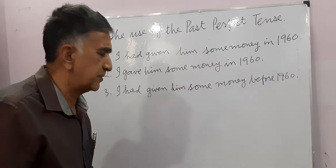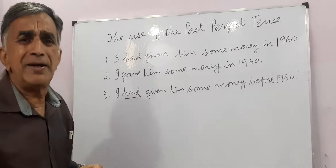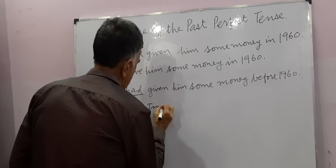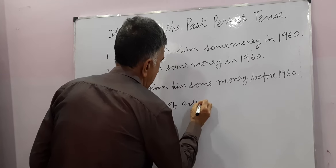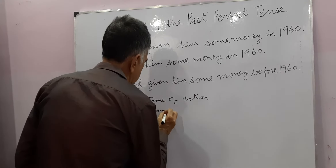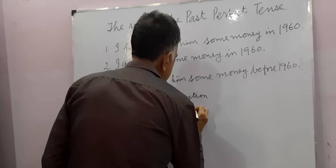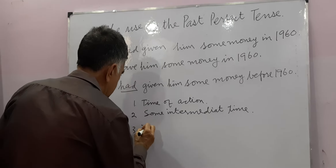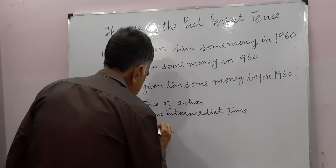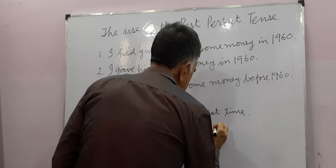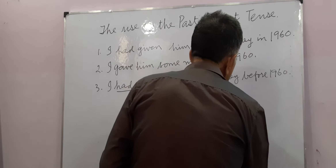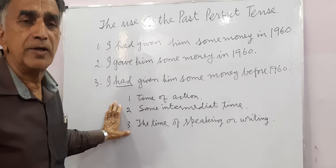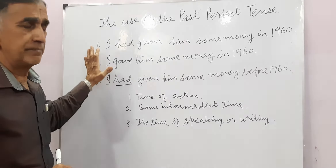The rule is we use had and had been when there are three times. Number one, time of action. Number two, some intermediate time. Number three, the time of speaking or writing. If we apply this rule, we can easily find the error in these sentences.